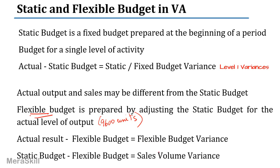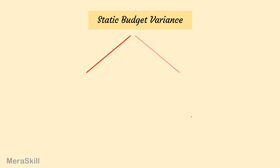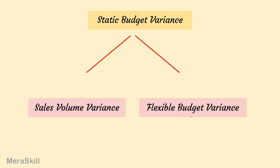The difference between the static budget and the flexible budget is the sales volume variance. The static budget was for 10,000 units, and at 9,600 units the difference of 400 units is your sales volume variance. So we take the static budget, convert it to a flexible budget for 9,600 units, then compare the flexible budget with the actual result — which is comparable because both are at 9,600 units. The static budget variance consists of the sales volume variance on one side and the flexible budget variance on the other. These are called the level 2 variances.